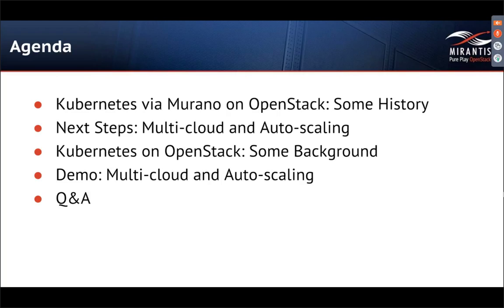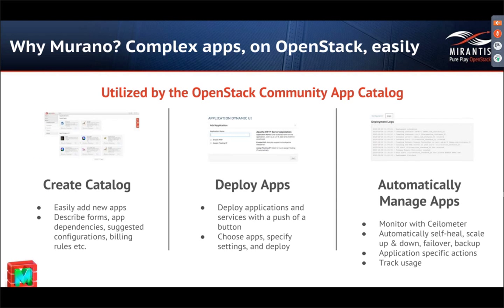Some background about Murano: the Murano application catalog is a driver for underlying orchestration engines available on OpenStack like HEAT as well as other tools. It simplifies the job of packaging, defining, distributing, cataloging, making available to end users, and ultimately configuring and deploying applications. It's the underlying logic behind the OpenStack community app catalog.